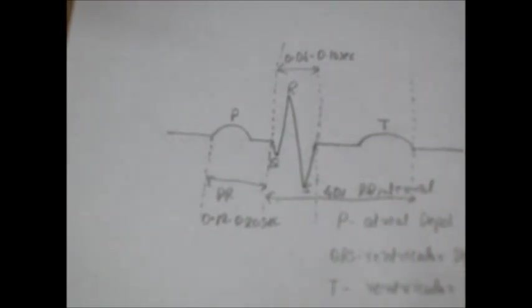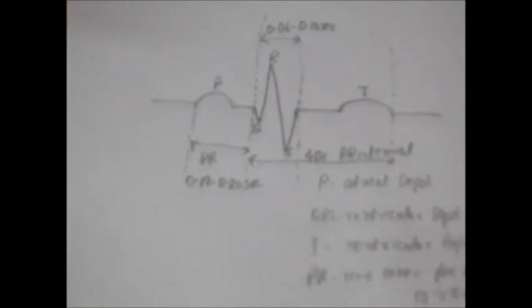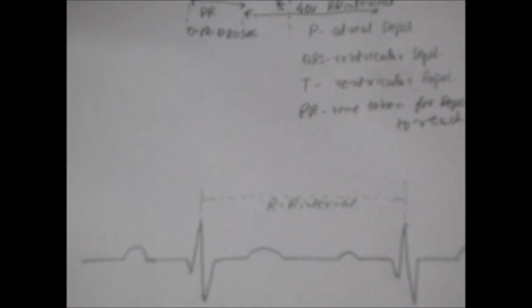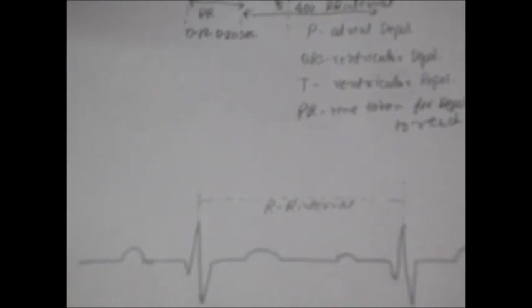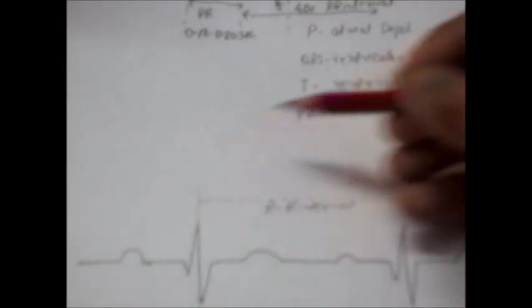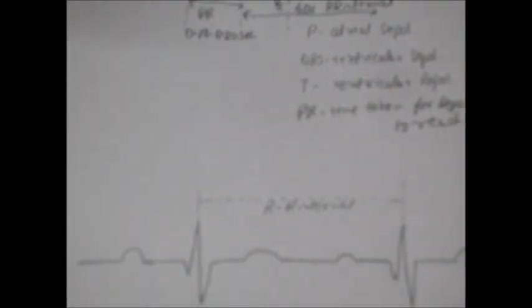This is a QT interval which is usually 40% of RR interval. And then we also have the main thing which is usually used to calculate the heart rate, which is an RR interval. RR interval is from the peak of one R wave till the peak of second R wave or the next R wave.